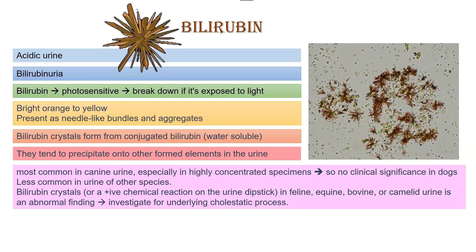You should remember that bilirubin is very photosensitive in nature. So if you have taken the urine sample at your home from your animal and you are sending it to the lab, make sure the sample is protected from light, because if the bilirubin in that sample is exposed to light, it will break down and you are going to have false positive or false negative results.